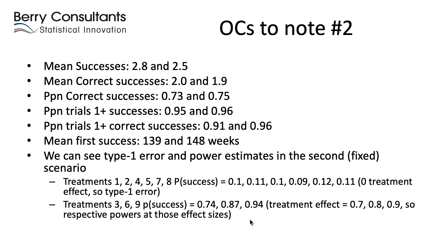One of the limitations of version 1.0 of the platform trial simulator — or FACTS 7.0 — is that we only have the option to compare against the whole control arm. Other options, like only comparing to concurrent control, will be coming in a later version.